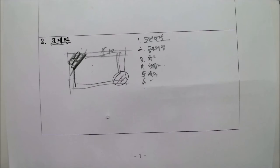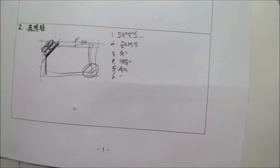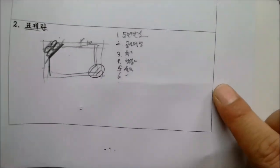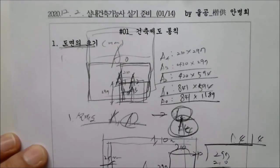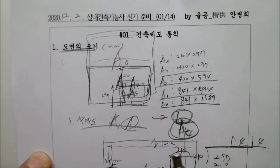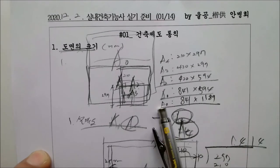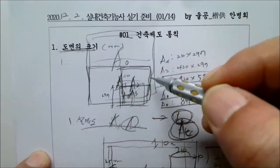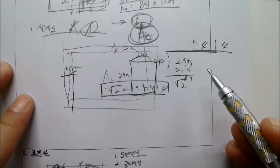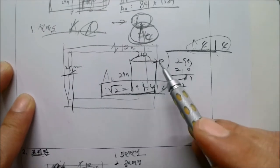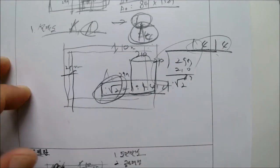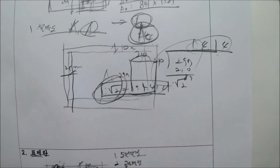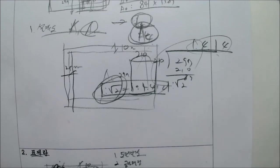도면의 크기, 충분히 이해하시겠죠? 복습을 하겠습니다. A4의 크기 이해했죠? A3, A2, A1, A0. 이것들이 점점 커졌습니다. 그리고 이 비율은 1대 1.414, 1대 루트 2입니다. 도면에 테두리는 10mm를 둔다. 철을 할 때 25mm 이상을 둔다. 도면을 접을 때는 A4를 기준으로 한다.